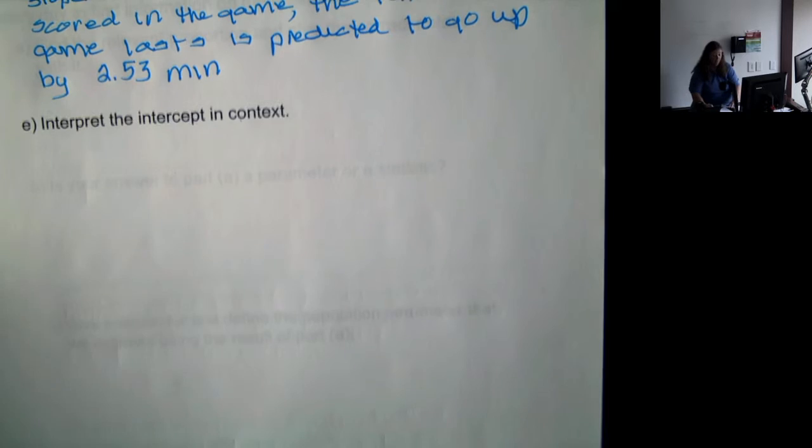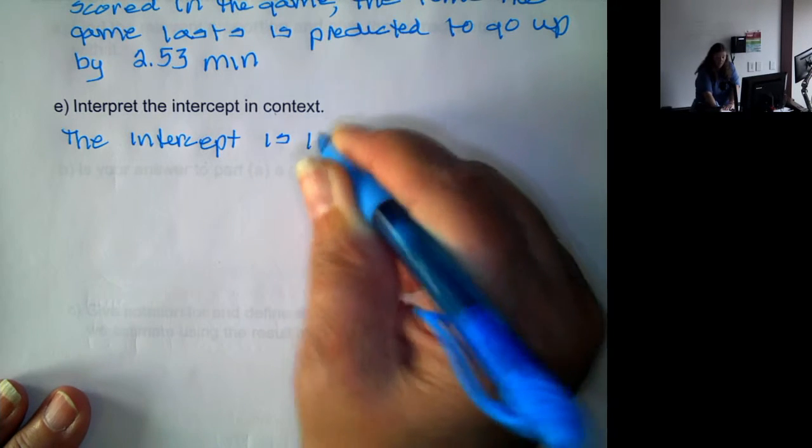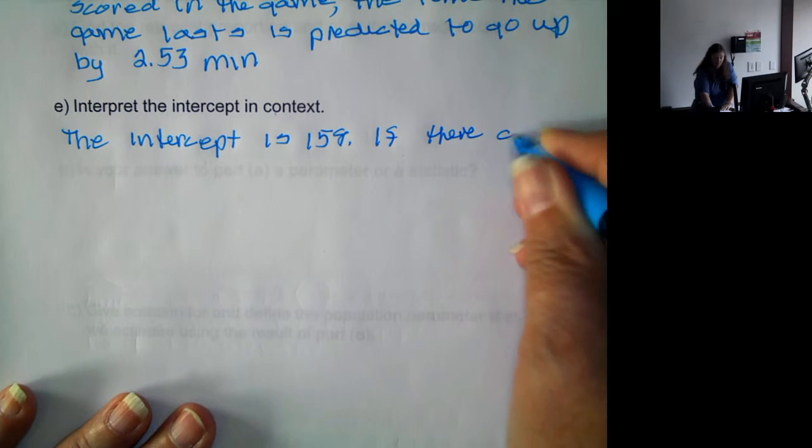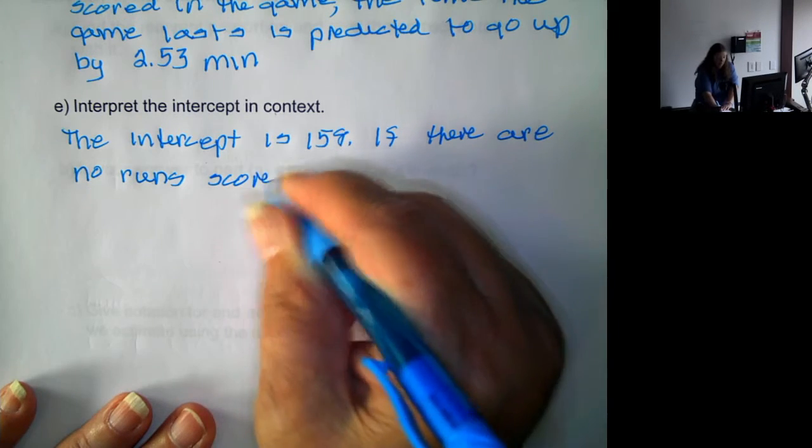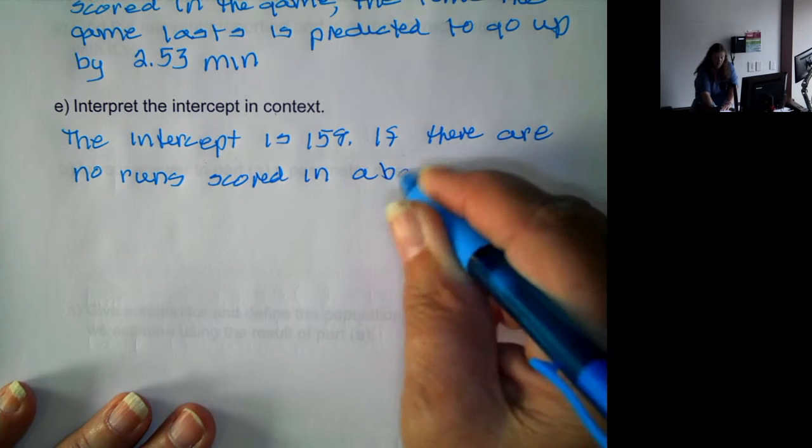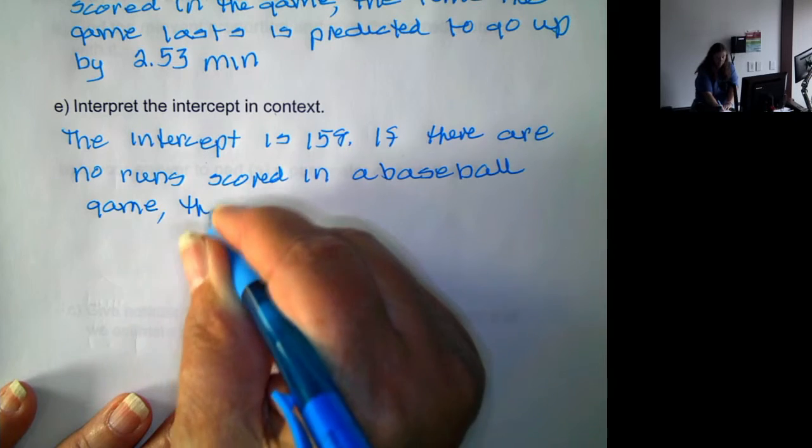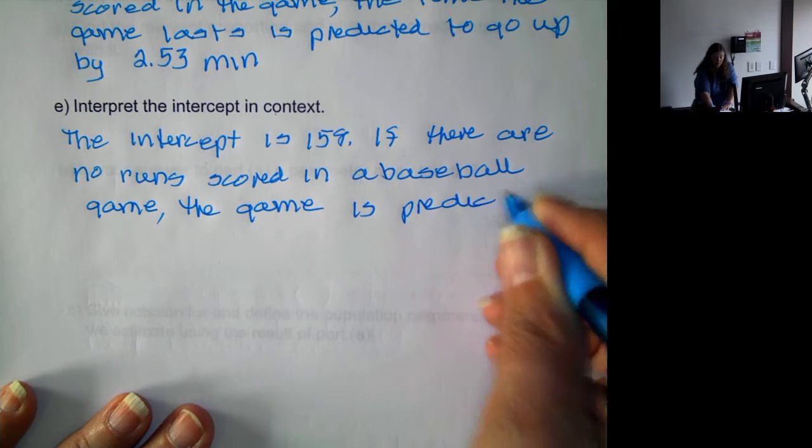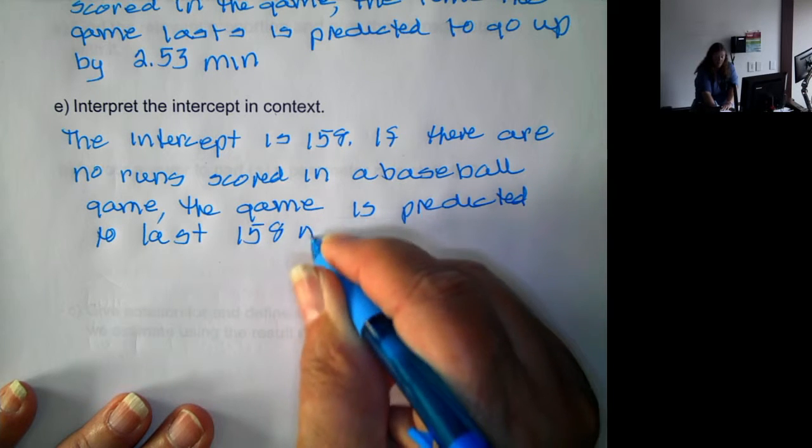Now we're asked to interpret the intercept. The y-intercept, that's the constant. So the intercept is 158. And this means that if there are no runs scored in a baseball game, the game is predicted to last 158 minutes.